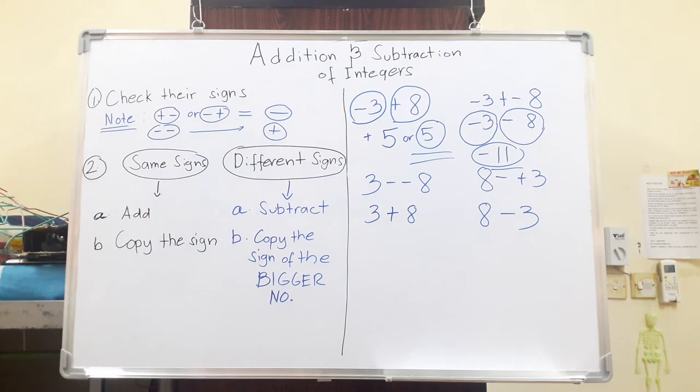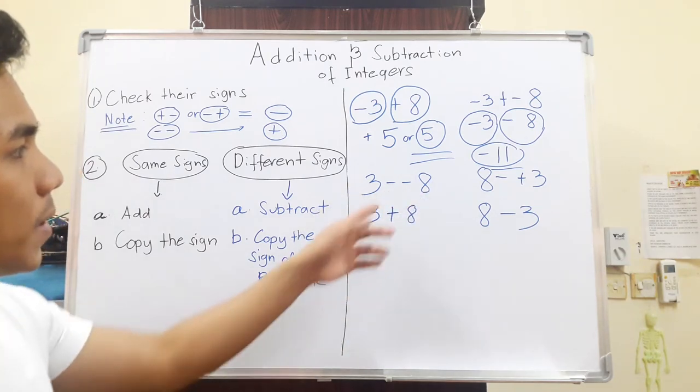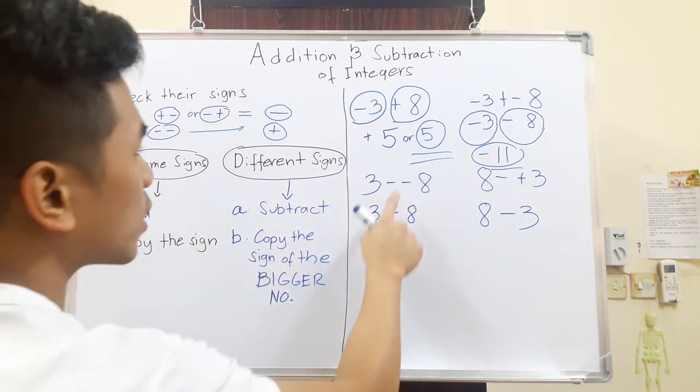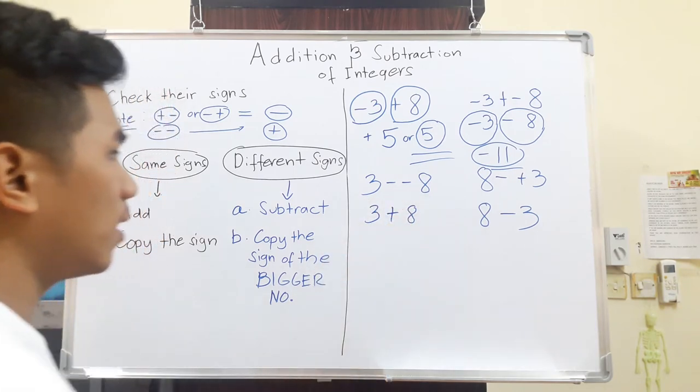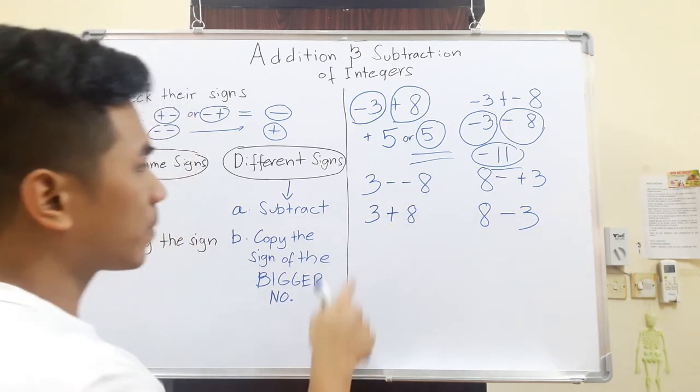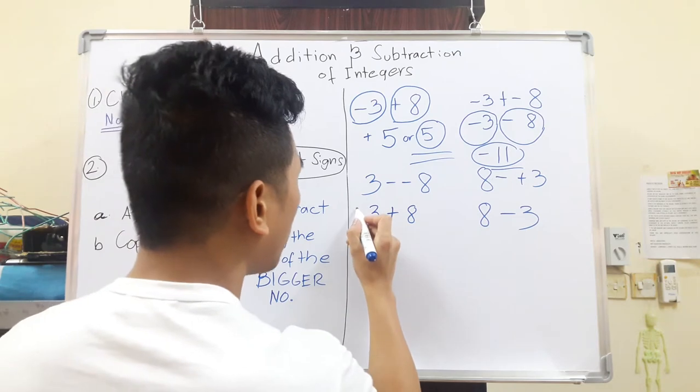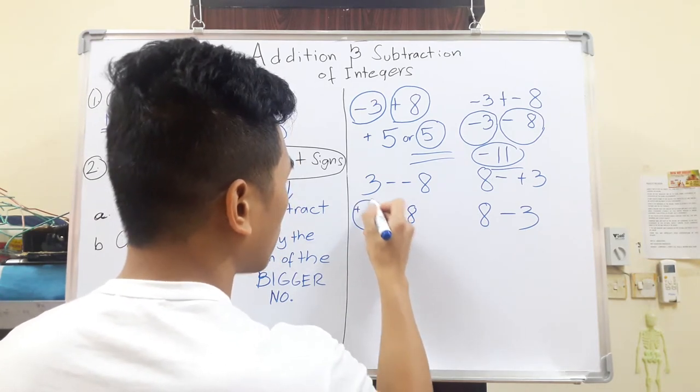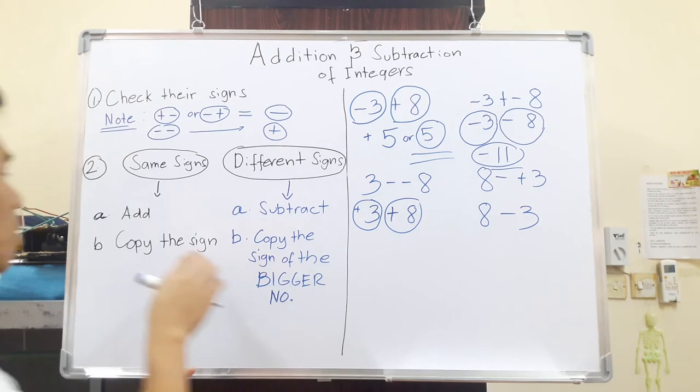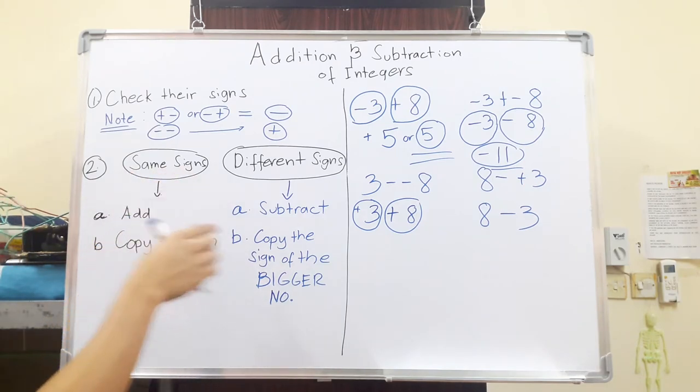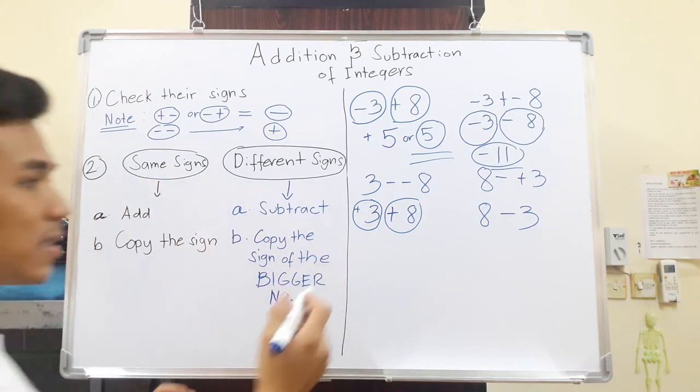Next, 3 minus minus 8, or 3 minus the negative 8. We can just simplify it into one big plus. Therefore, we just have 3 and 8. So 3 is positive. If you don't see any sign in here, it's just positive. Positive, positive. So they have the same signs. So you just add them. 3+8 is 11.